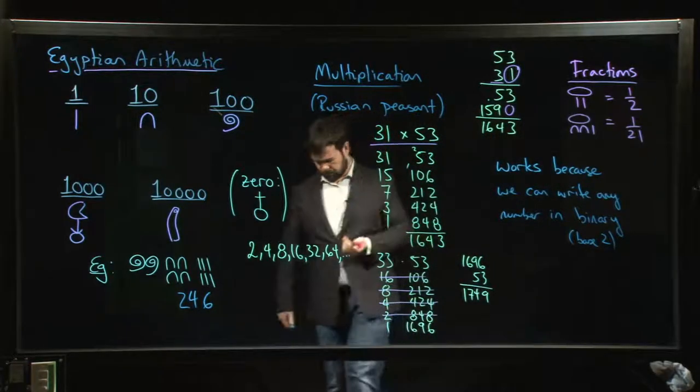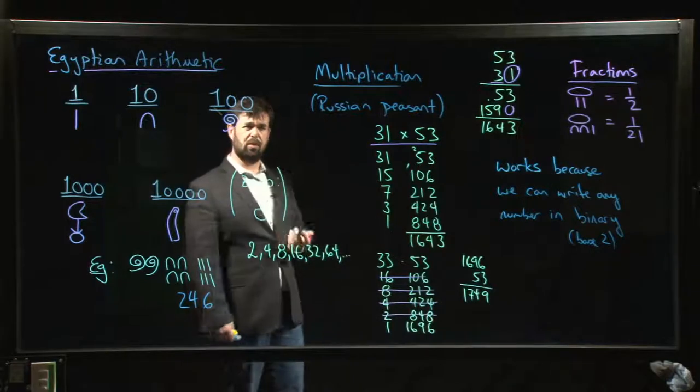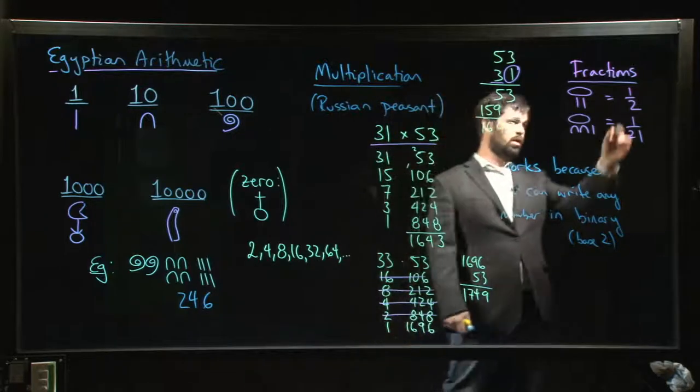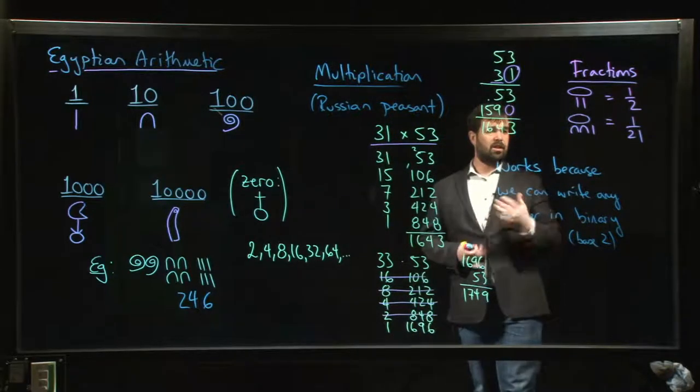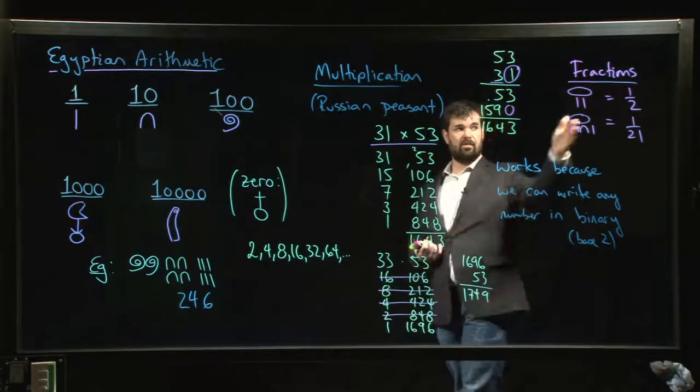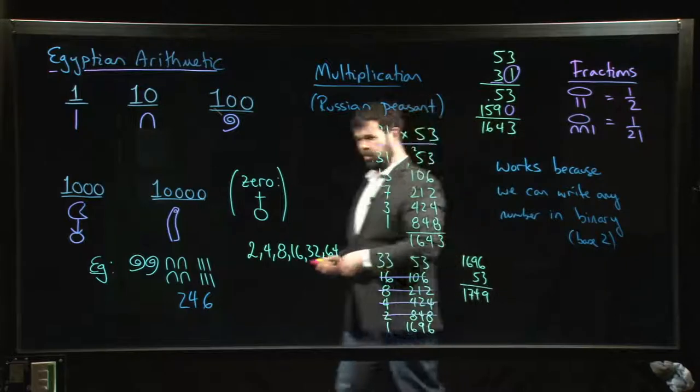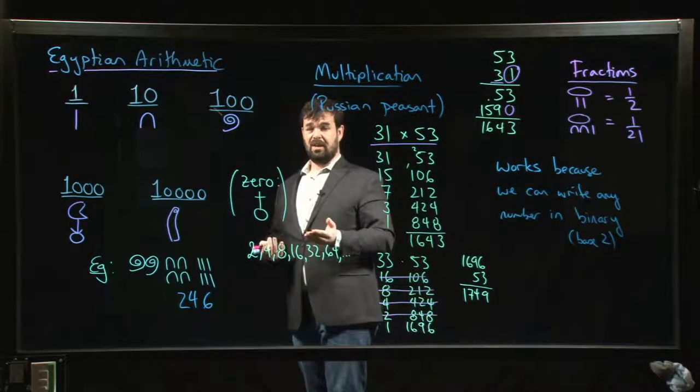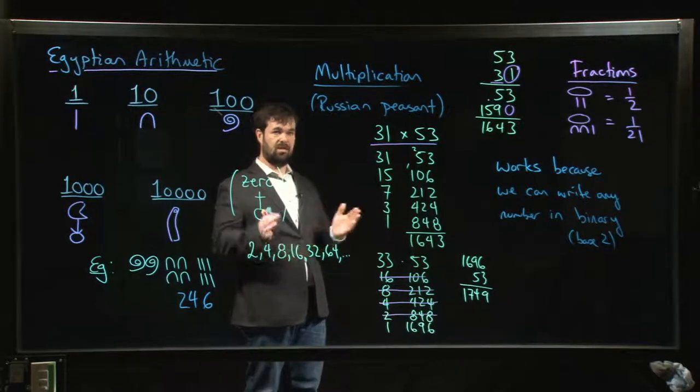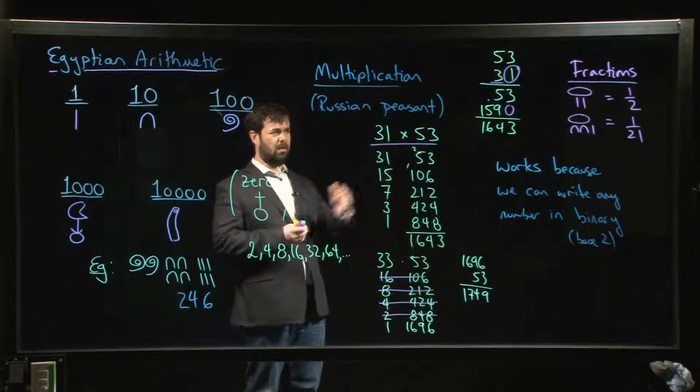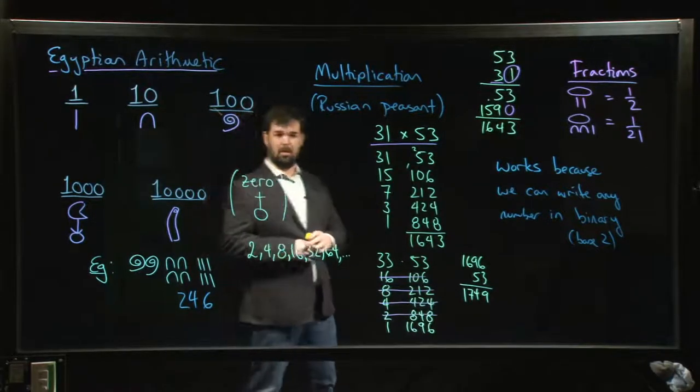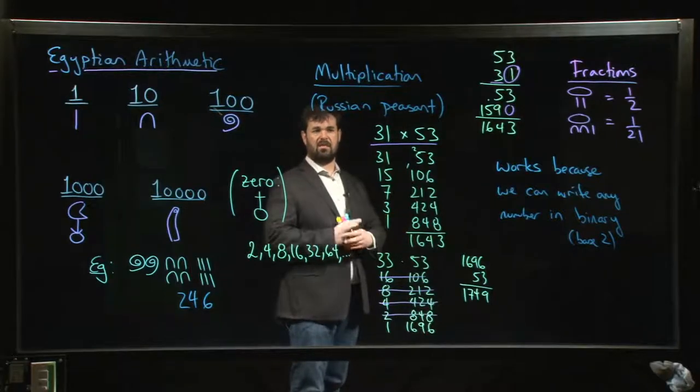They had a couple special fractions like two-thirds and three-quarters they actually had notation for, but almost all the fractions were written as these reciprocals. It turns out that you can take any fraction that we use and write it as a sum of reciprocals. We might do a couple of examples of that. There's something called a greedy algorithm that lets you rewrite any fraction, at least any fraction that's less than one, as a sum of reciprocals. We'll look at that as well in class.